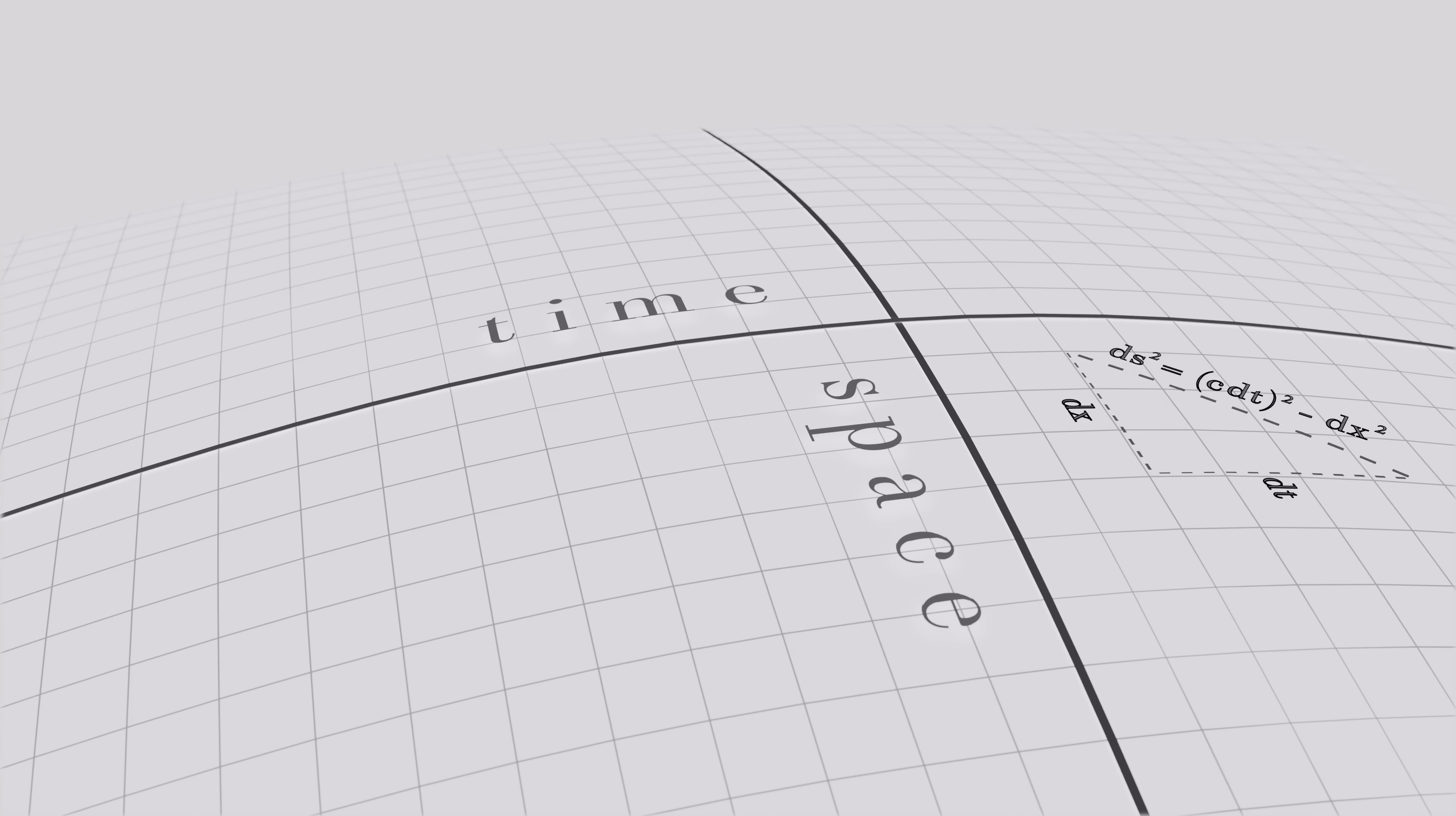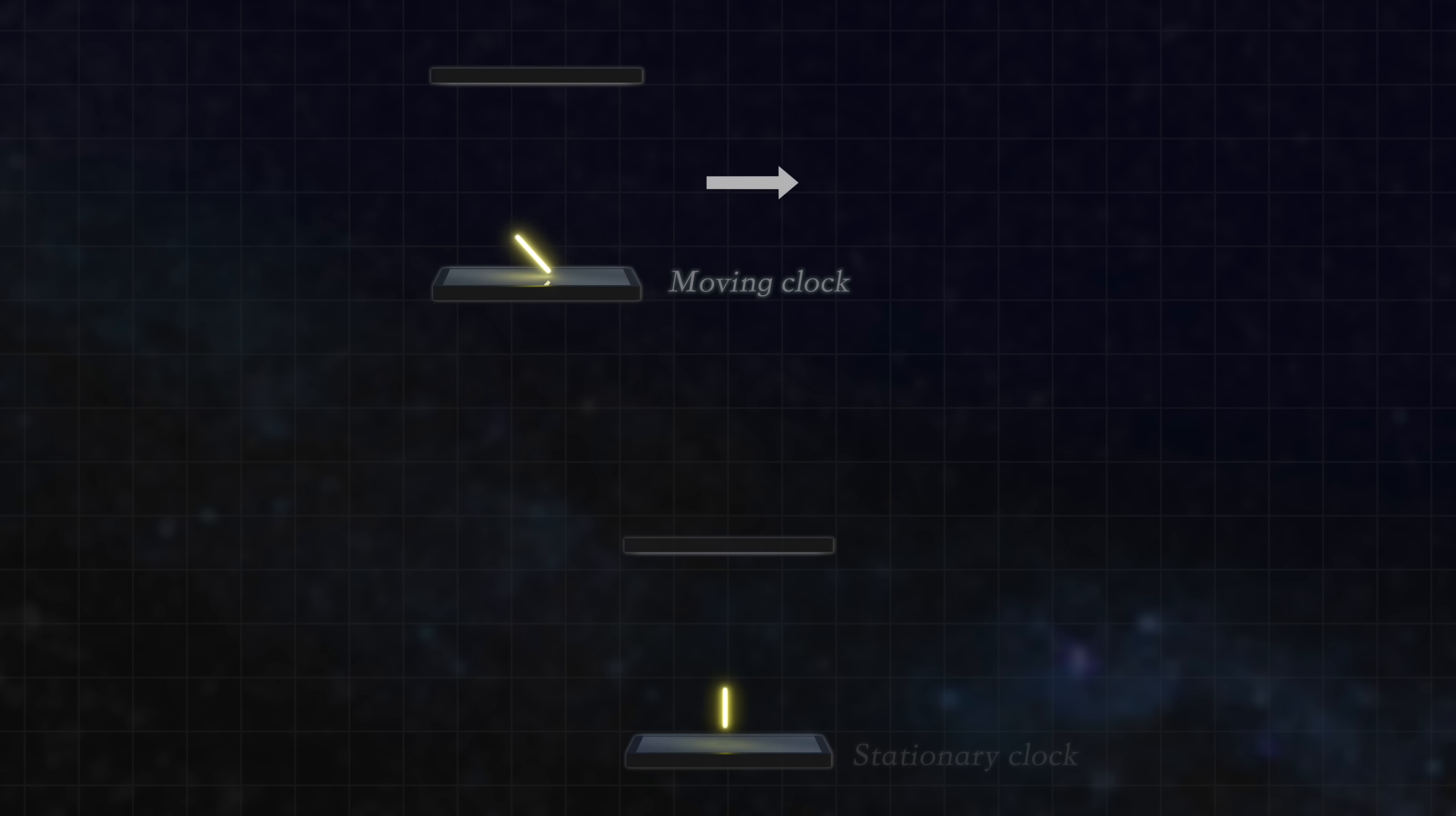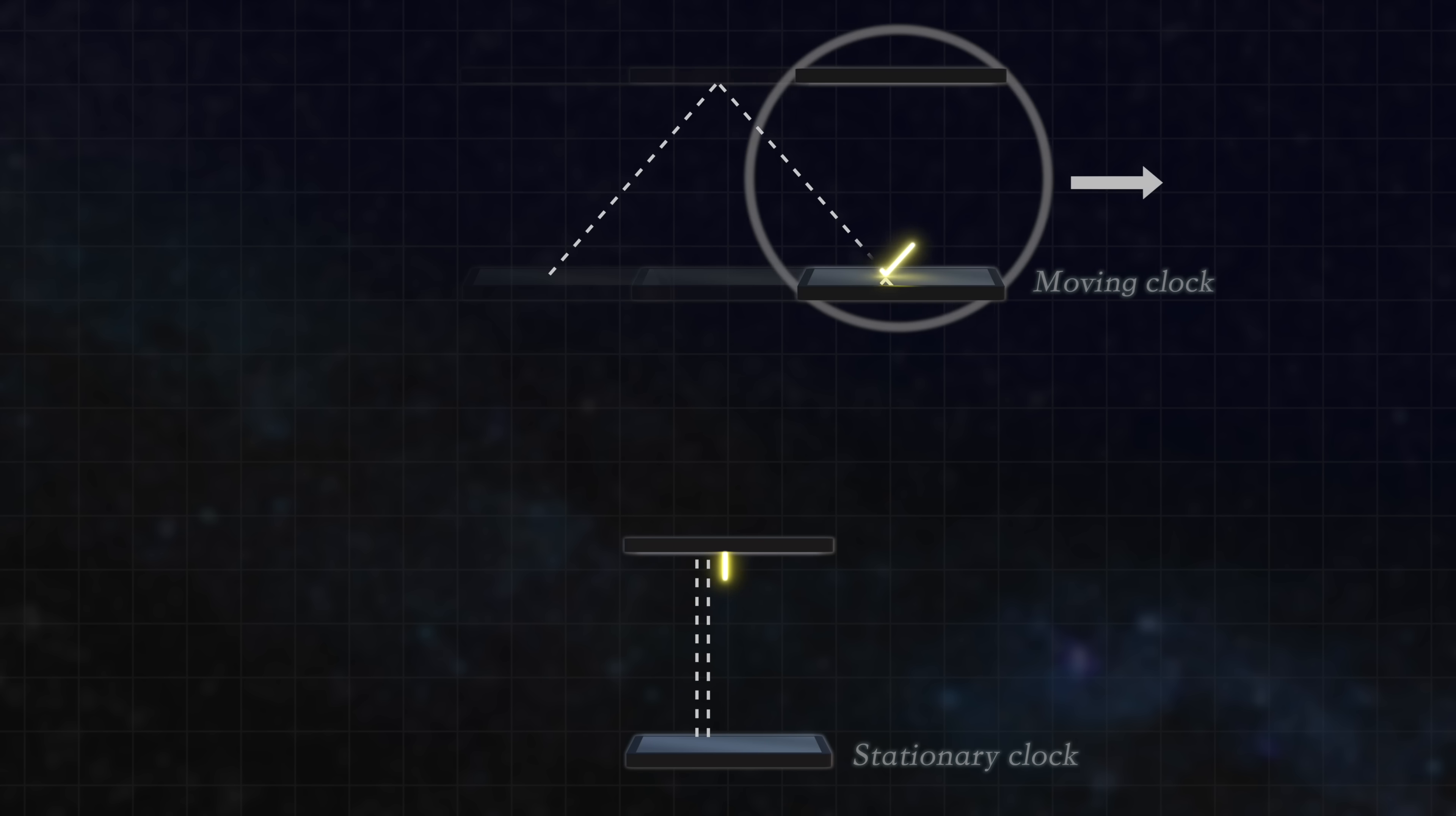Indeed, as we already know, a light beam has to travel more distance if locally confined to a light clock which is in motion relative to space.